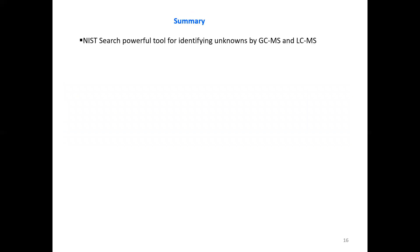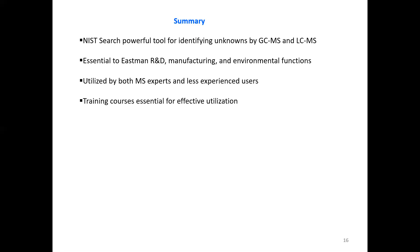So in summary, I would like to say that the NIST search is a very powerful tool for identifying unknowns by GCMS and LCMS. It's essential to our Eastman R&D manufacturer and environmental functions. It's utilized by both MS experts within our corporation and less experienced users, both use it very effectively. The training courses are essential for effective utilization of these libraries and databases. And NIST continues to add large numbers of imported spectra each year. The hybrid search greatly increases the effectiveness of all available EI and MSMS libraries.